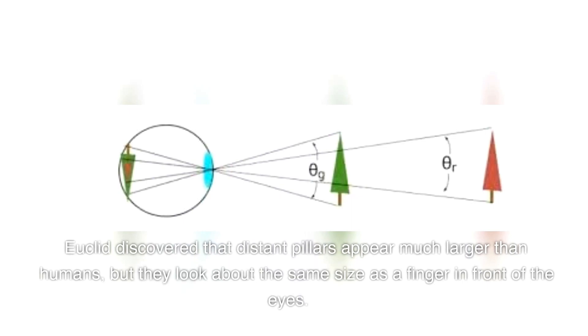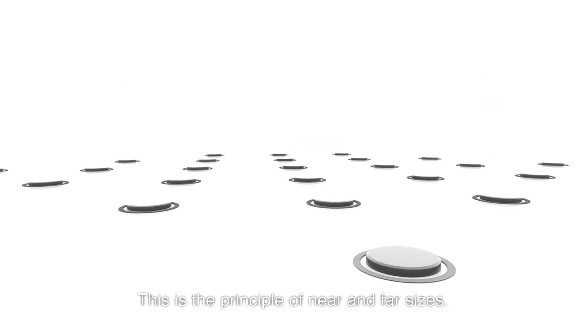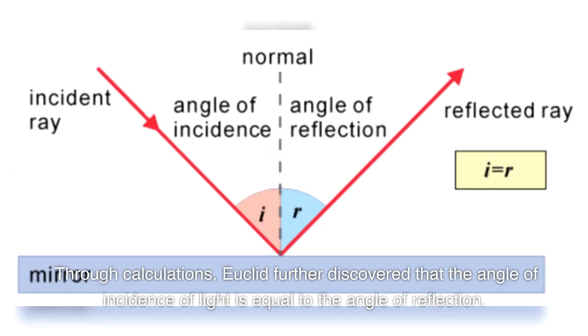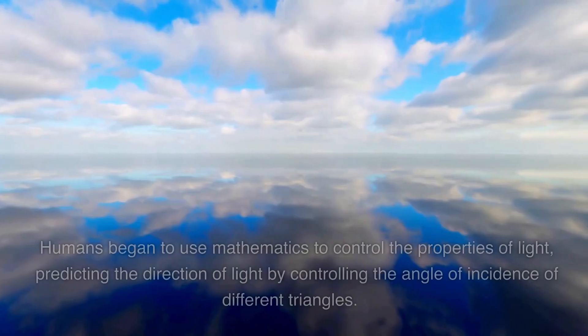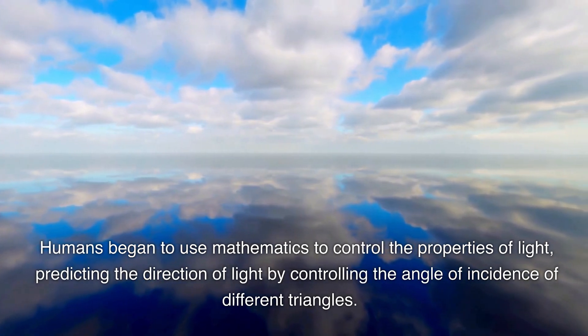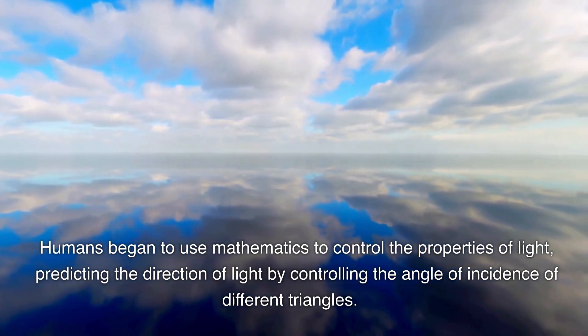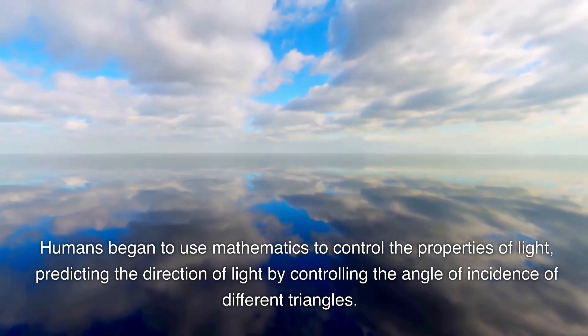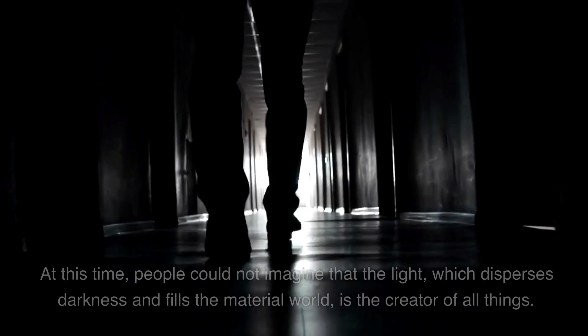Euclid discovered that distant pillars appear much larger than humans, but they look about the same size as a finger in front of the eyes. This is the principle of near and far sizes. Through calculations, Euclid further discovered that the angle of incidence of light is equal to the angle of reflection. Humans began to use mathematics to control the properties of light, predicting the direction of light by controlling the angle of incidence of different triangles.